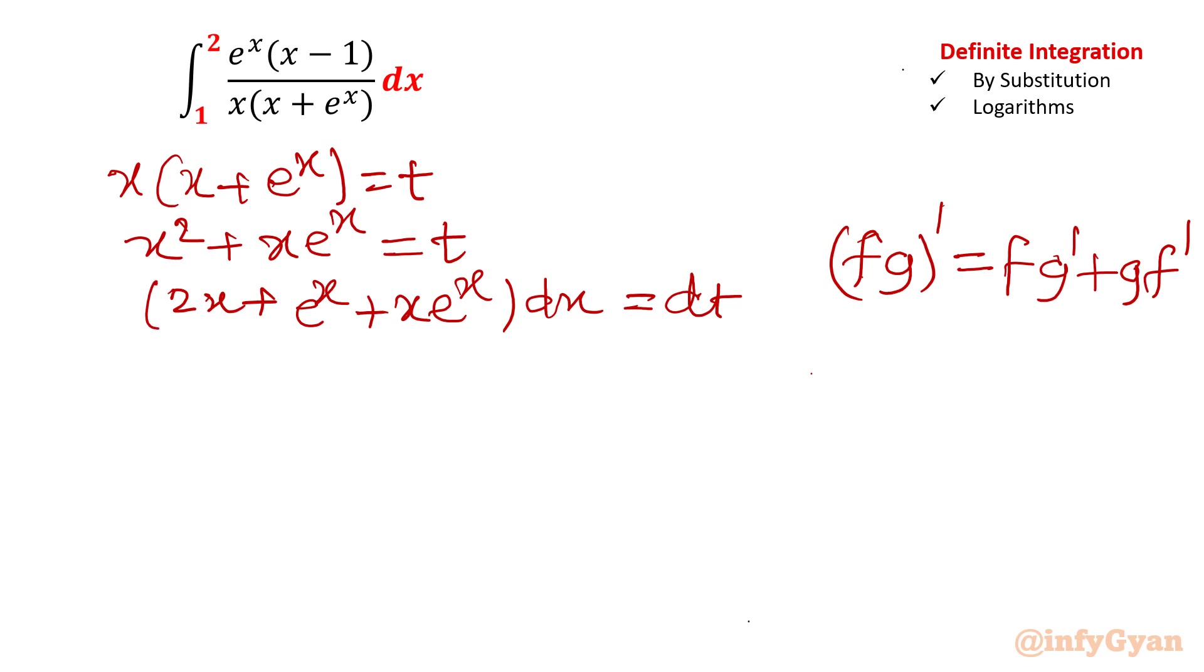If you will see, it is not matching with your numerator. You can simplify one step. Again, you can write, if you will take x common or you can separate this 2x, then you can take e raised to the power x outside, it is x plus 1. So nowhere you are getting minus sign. So you cannot replace your numerator by dt. So it is not possible to consider direct substitution.